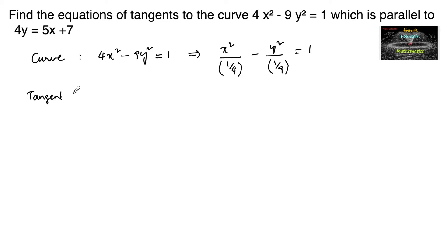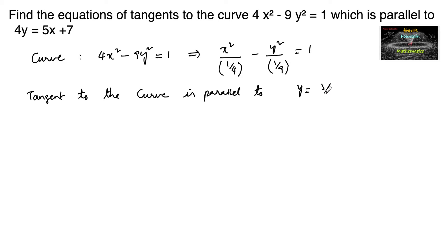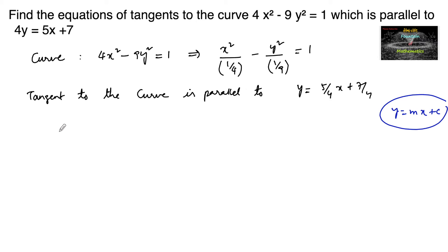The tangent to the curve is parallel to the line 4y = 5x + 7, which can also be written as y = (5/4)x + 7/4. This is in the form y = mx + c, whose slope is m = 5/4. So we can consider the slope of the tangent as 5/4.